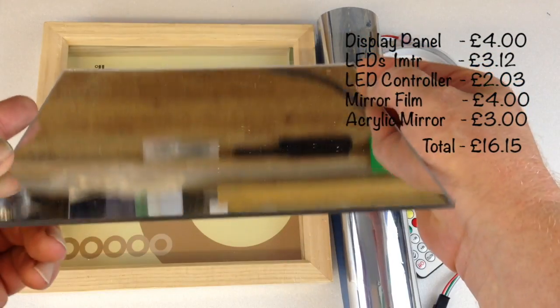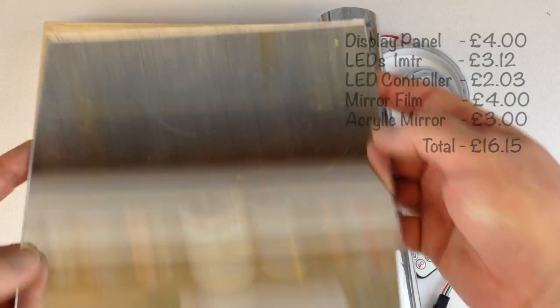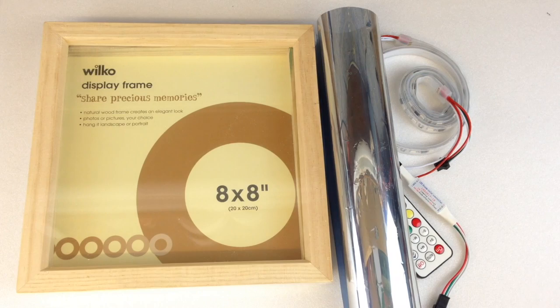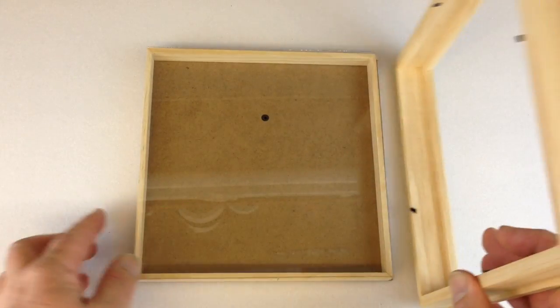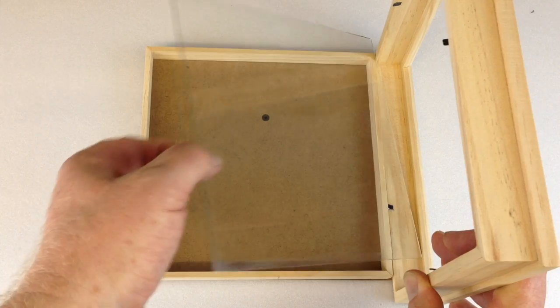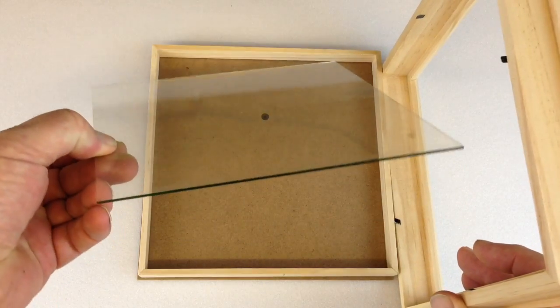Now I've actually got a six millimeter mirror here, but you can buy a three millimeter on the internet, eight inches by eight inches, and that's three pounds. Okay, we've opened the frame, so we've got the outside of the frame, the main piece, the glass which we'll come to - we will be using that a little bit later.